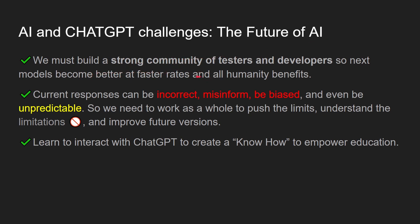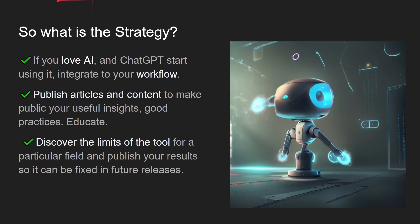Regarding AI and ChatGPT challenges, we must build a strong community of testers and developers so next models improve at faster rates and all of humanity benefits. Current responses can be incorrect, misinformed, or even unpredictable. We need to work as a whole community to push limits, understand limitations, and improve future versions. We need to learn how to interact with ChatGPT to empower our education.